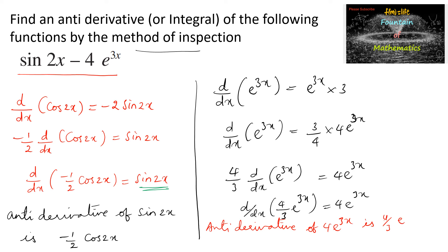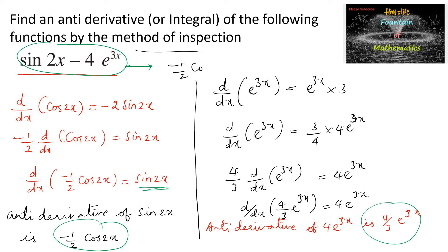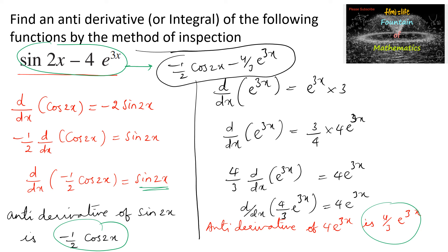From both results, we can conclude that the anti-derivative of the given function is minus 1 by 2 cos 2x minus 4 by 3 e^(3x). That is the final answer.